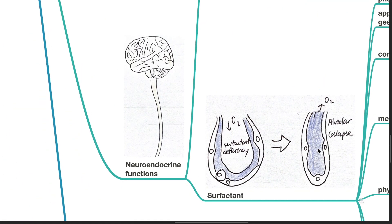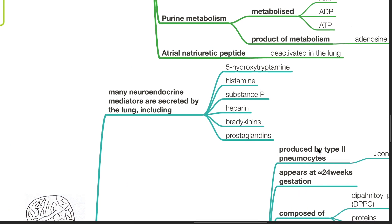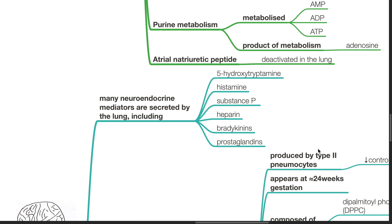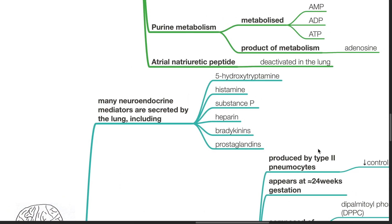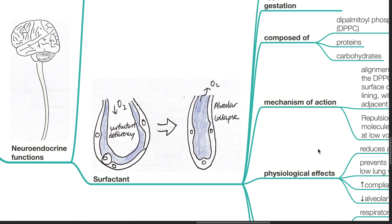Neuroendocrine functions of the lung. Many neuroendocrine mediators are secreted by the lung, including serotonin, histamine, substance P, heparin, bradykinins and prostaglandins.